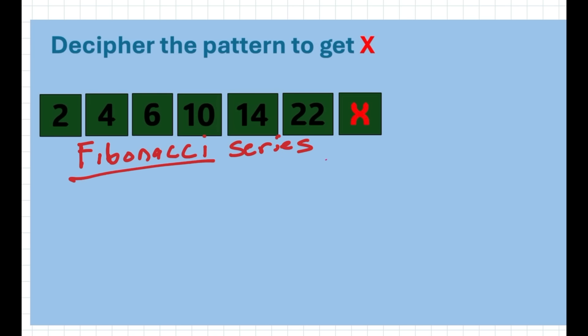A Fibonacci series means that the next number is related to the previous number. Looking at this series carefully, you'll discover there are multiples of prime numbers. A prime number is a number that cannot be divided by any other number except itself and one.